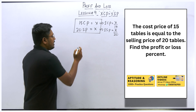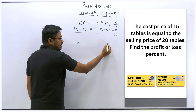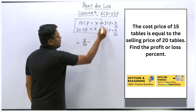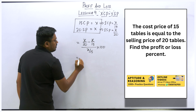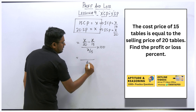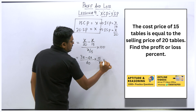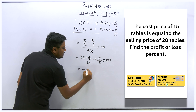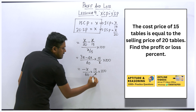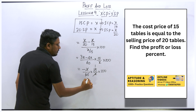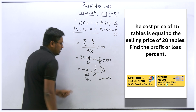Applying the formula: (x/20 − x/15) / (x/15) × 100. LCM of 20 and 15 is 60. So (3x − 4x)/60, divided by x/15, multiplied by 100. Bringing 15/x to the numerator: (−x/60) × (15/x) × 100. Cancel x and x; 15/60 = 1/4. So we get −(1/4) × 100 = −25.